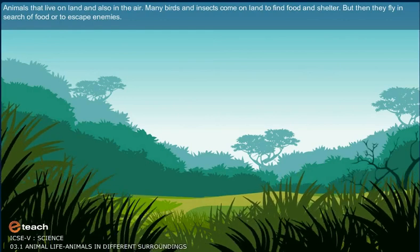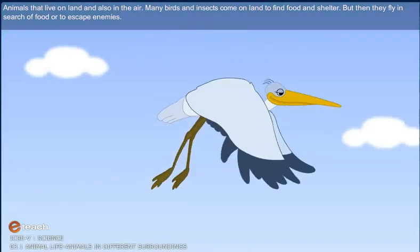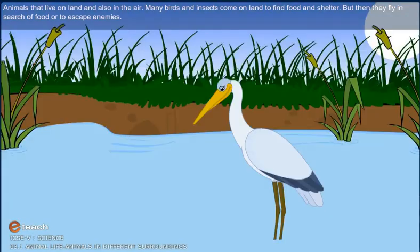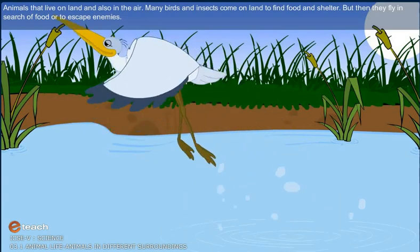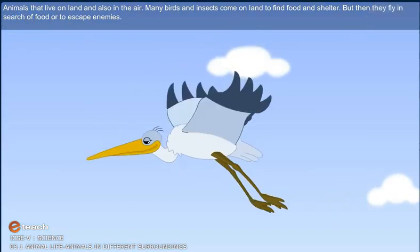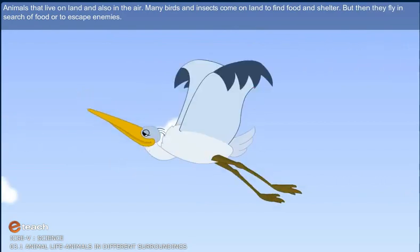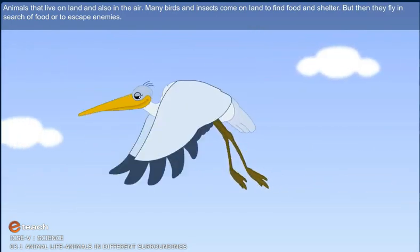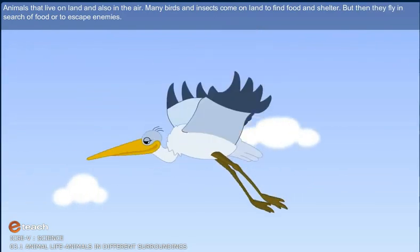Animals that live on land and also in the air: many birds and insects come on the land to find food and shelter, but then they fly in search of food or to escape their enemies.